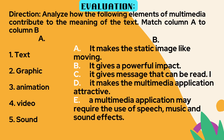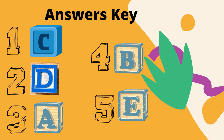Now let's answer this evaluation. Analyze how the following elements of multimedia contribute to the meaning of the text. Match Column A to Column B. Column A: 1-text, 2-graphic, 3-animation, 4-video, 5-sound. Column B: A-it makes the static image look like it is moving; B-it gives a powerful impact; C-it gives a message so it can be read; D-it makes the multimedia application attractive; E-multimedia application may require the use of speech, music, and sound effects. The answers: 1-C, 2-D, 3-A, 4-B, 5-E.